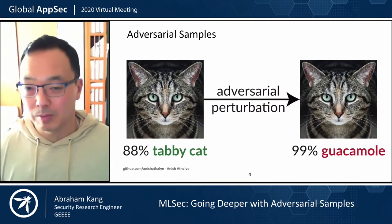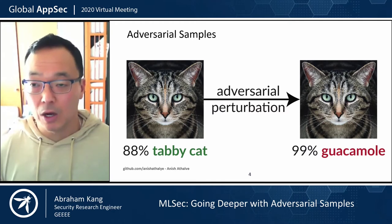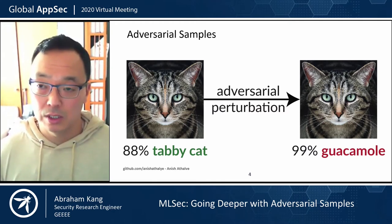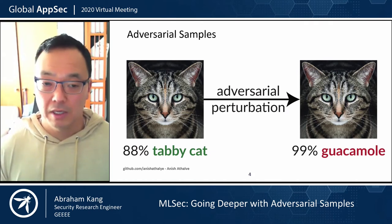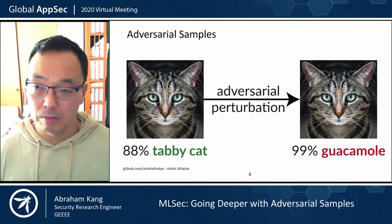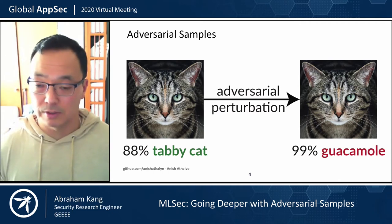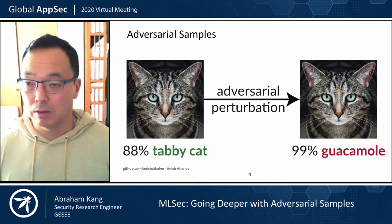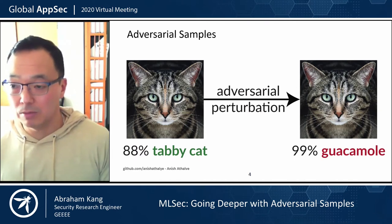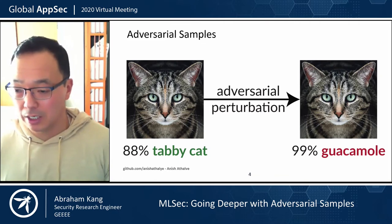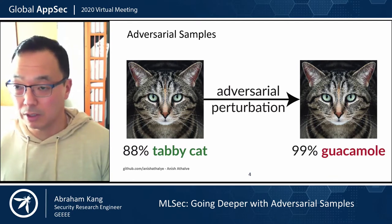So what are adversarial samples? Think of a machine learning model that takes images as input, and on its output it tells you what it thinks the image is of with a certain percentage confidence. On the left we have a picture of a cat. When we run it through the model without messing with the image, it produces an output like 'tabby cat' with high confidence. Now if we embed an adversarial perturbation that's humanly indiscernible — if you look at the right image, that image has the perturbation in it — when you run that through the model, it gets 99% confident that the picture is of guacamole.